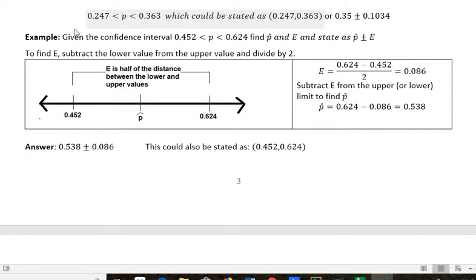In this problem, given the confidence interval from 0.452 up to 0.624, find p-hat and E and state the answer in this format. We know that this value is p-hat minus E and this value is p-hat plus E, but how do we know what those two values are?